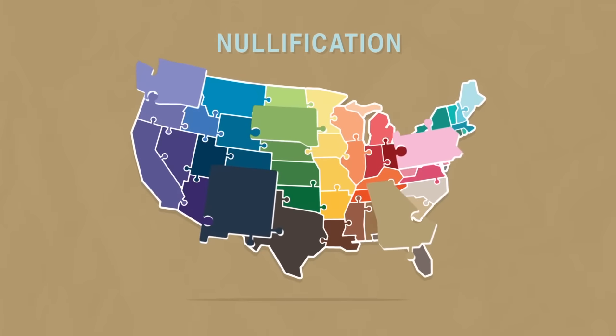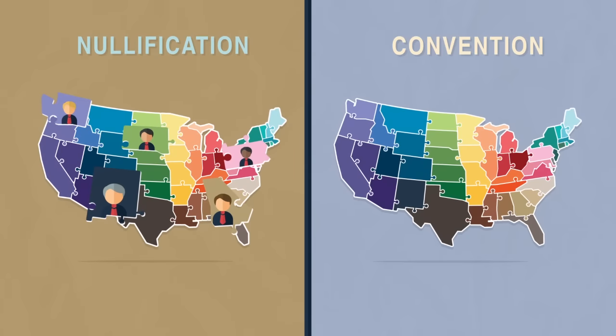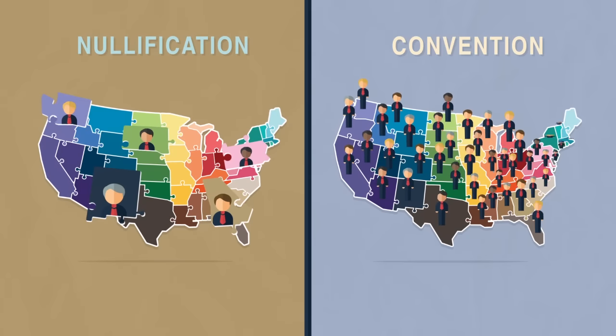With nullification, responsibility rests with each state's elected legislature sitting as the authority. With the convention, responsibility rests with delegates appointed or elected from all 50 states. Currently, there is no way of knowing who your delegate would be.